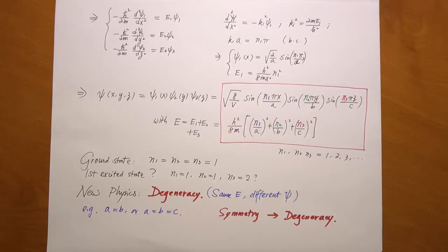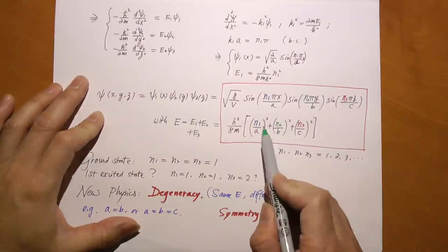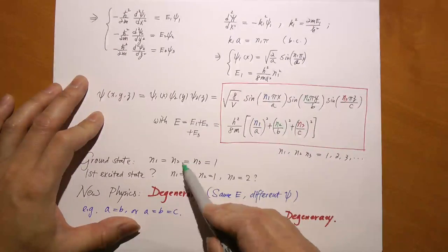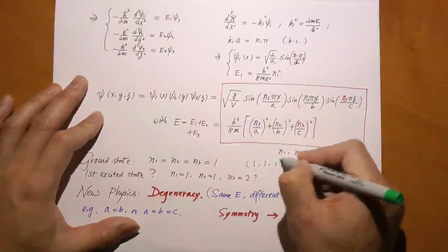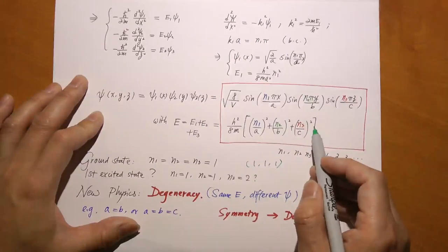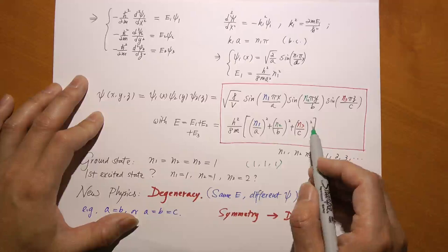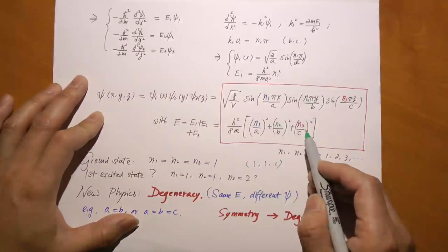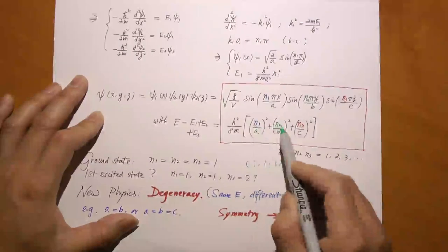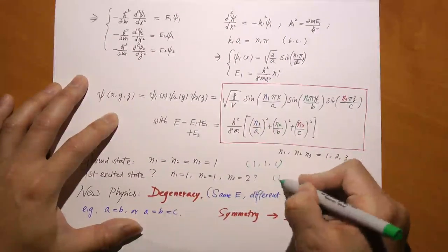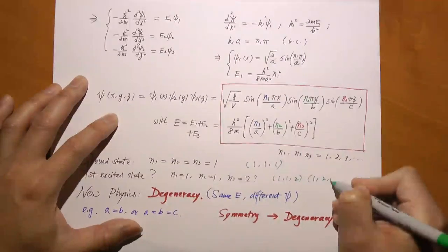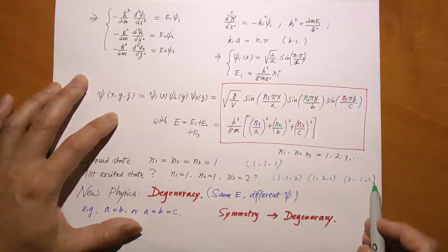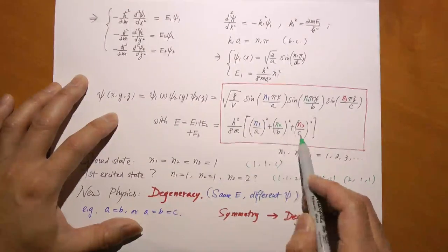The ground state is where the energy is the lowest. How do you make energy lowest? You set N1=N2=N3=1 - that's the lowest possible value, and there's only one such set. That is the ground state. Now, interesting things happen when you try to find the first excited state. You want to elevate one of N1, N2, N3 from 1 to 2. So do you want (1,1,2), (1,2,1), or (2,1,1)? Those are three candidates. Which one has the lowest energy? Well, that depends on the values of A, B, and C - the width of the three dimensions.